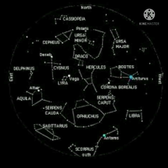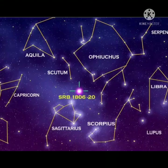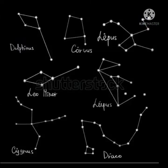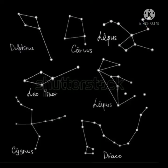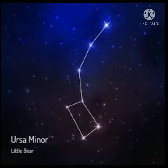Let's know about constellations. A group of stars that appear to form some recognizable pattern or shape in the sky is known as a constellation. In ancient times, people were dependent on these stars to find directions and to measure time. Some constellations include Ursa Major, also known as the Great Bear or Big Dipper.